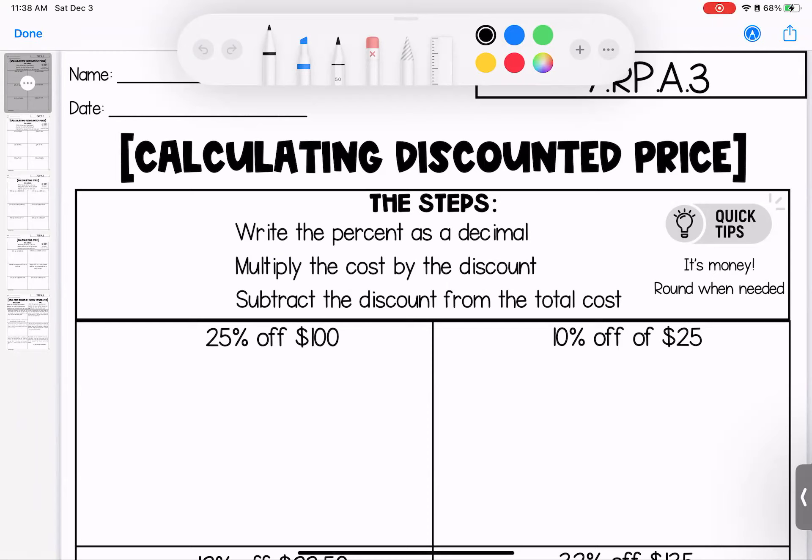Let's talk about why we would need this and use this. It's important to understand how you'd utilize these skills in the real world. Discounted price you're going to use a lot when shopping. It can help you get a better price and make sure you're paying the correct amount at the register. When calculating discounted price, we're looking for three steps.